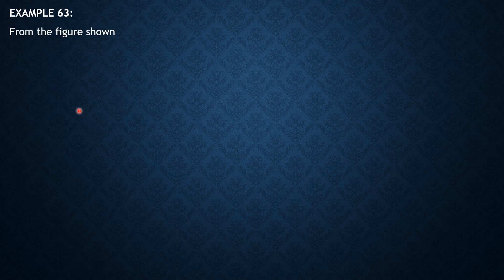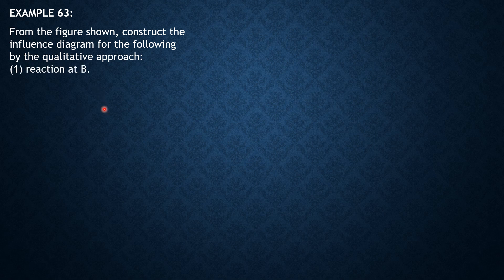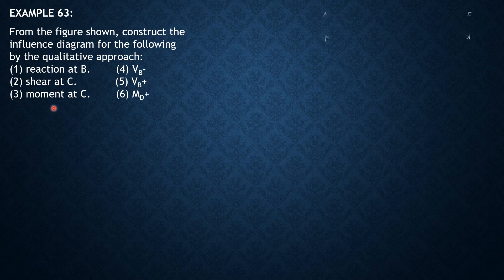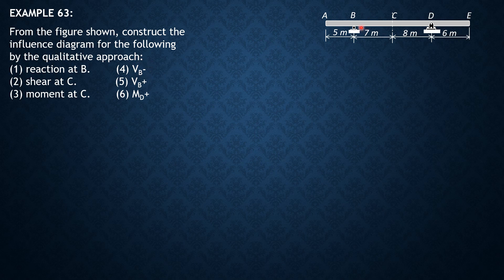Let's have the solution to example 63 on qualitative influence lines. Construction of influence lines by the qualitative approach by Muller-Breslau. From the figure shown, construct the influence lines or influence diagram for the following: reaction at B, shear at C, moment at C, shear just to the left of B, shear just to the right of B, and moment just to the right of D.